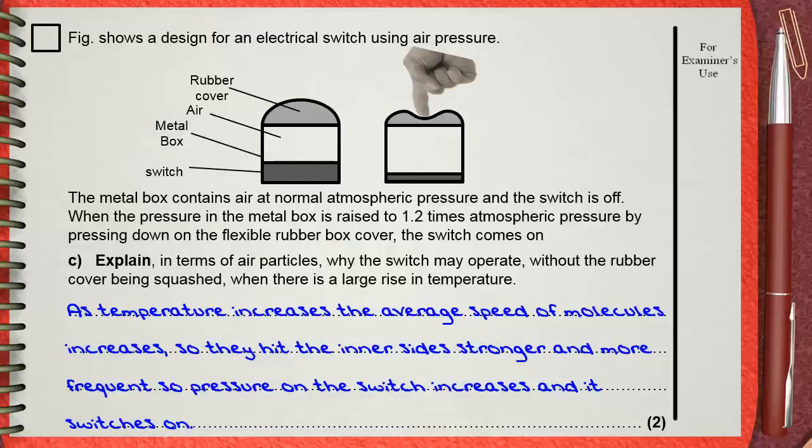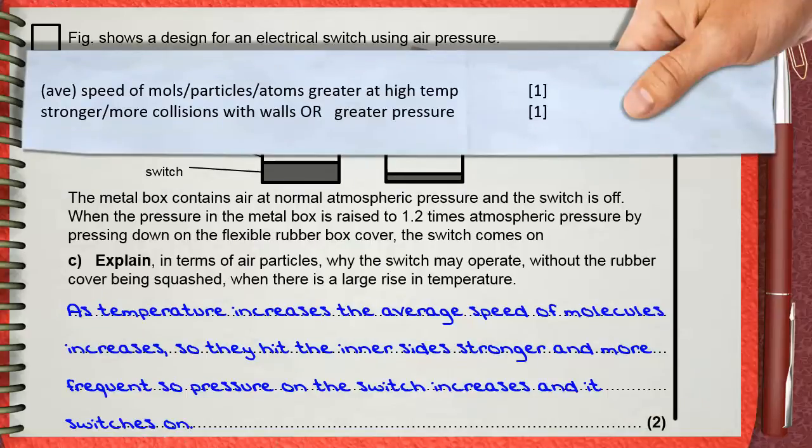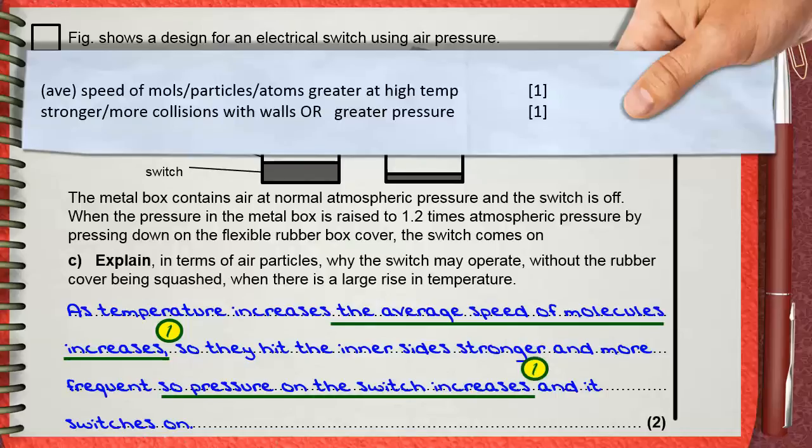The first mark is to mention that average speed of molecules, particles, or atoms is greater at high temperature. The second mark is to mention that these molecules will make stronger or more collisions with the walls, or you can say greater pressure. This is the second mark for the two mark question.